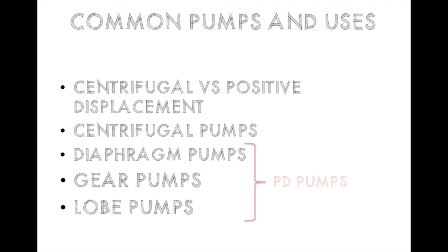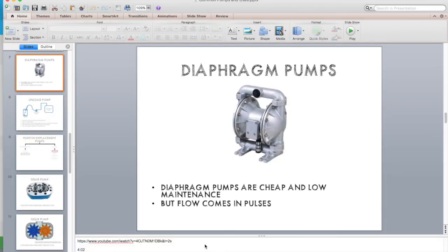So we talked about centrifugal versus positive displacement, went into a bit more detail on centrifugal pumps, and covered three types of PD pumps: diaphragm, gear pumps, and lobe pumps. If you liked this video, please subscribe, and I'd love to hear what kind of problems you're facing. I appreciate you watching. Stay tuned for the next one — this is Mike Butler from Process Engineer School. I'll see you in the next go-around.